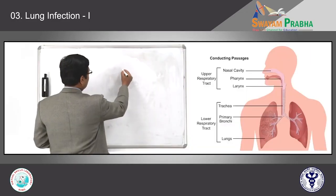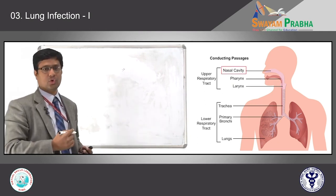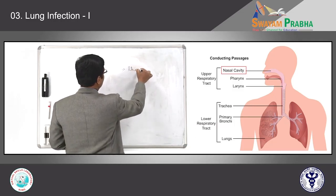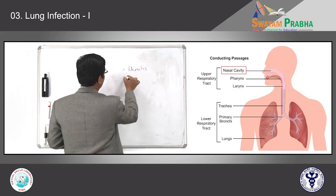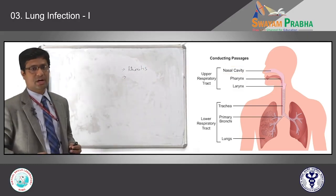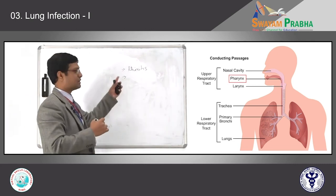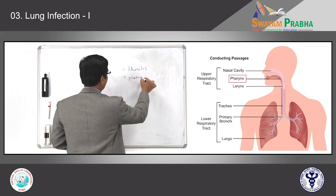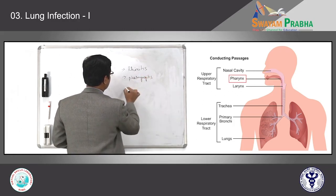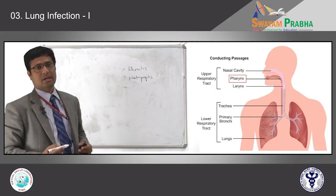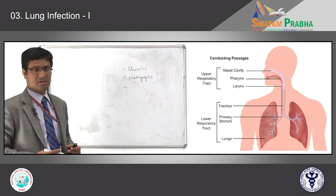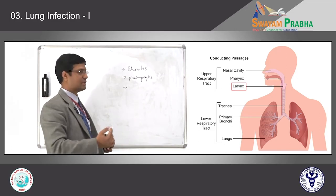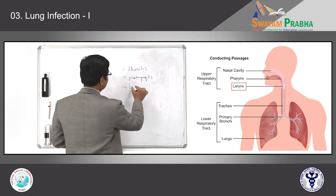For example, if infection occurs in the nose, there is a specific terminology — we call it rhinitis. If inflammation occurs in the pharynx, which is present just below the nose, we call it pharyngitis. The last component of the upper respiratory tract, or the beginning of the lower respiratory tract, is the larynx. If there is infection or inflammation of the larynx, we call it laryngitis.